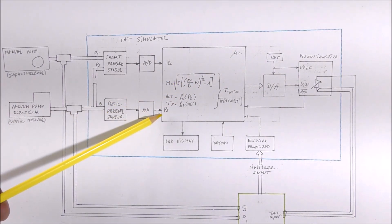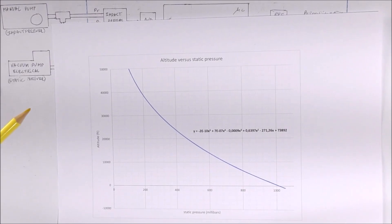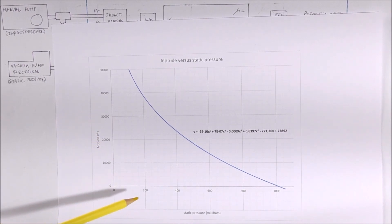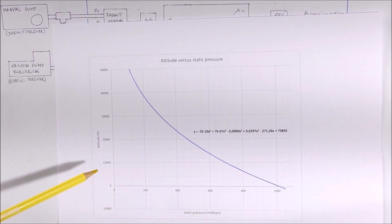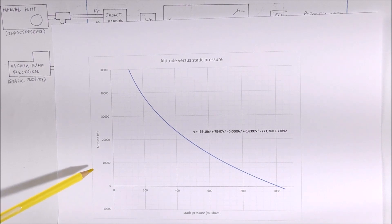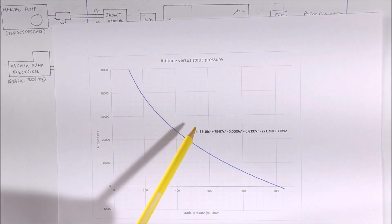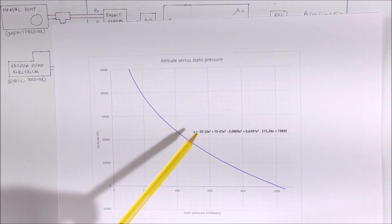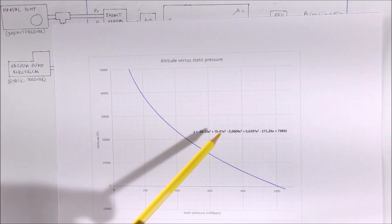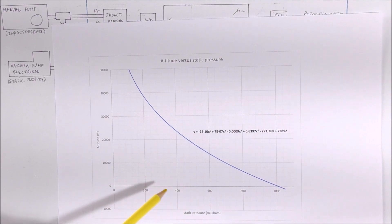From the static pressure, it is also possible to compute the altitude. We can see here the relation between the static pressure on the x-axis and the altitude in feet. There is a fitting function which is a polynomial of fifth degree. This function will be included in the firmware in order to compute the altitude from the static pressure.